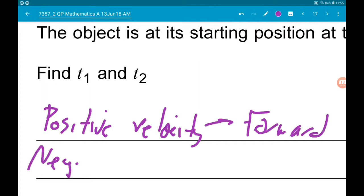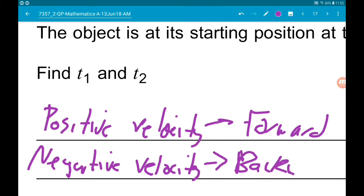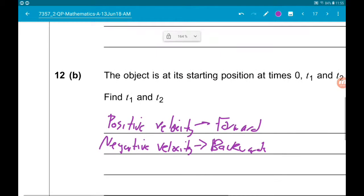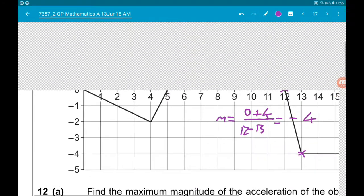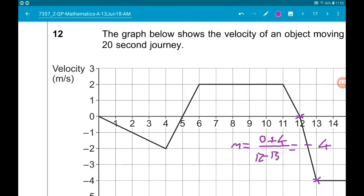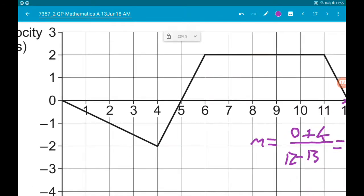Negative velocity means we are moving backwards. And remember, we are traveling in a straight line, so distance on these guys is the area between the graph and the x-axis.